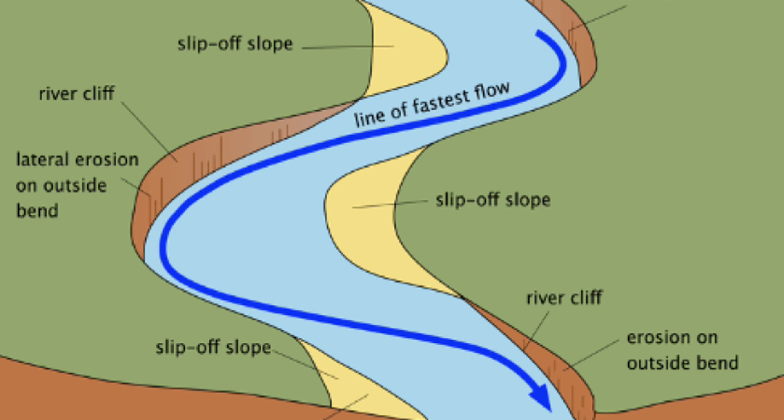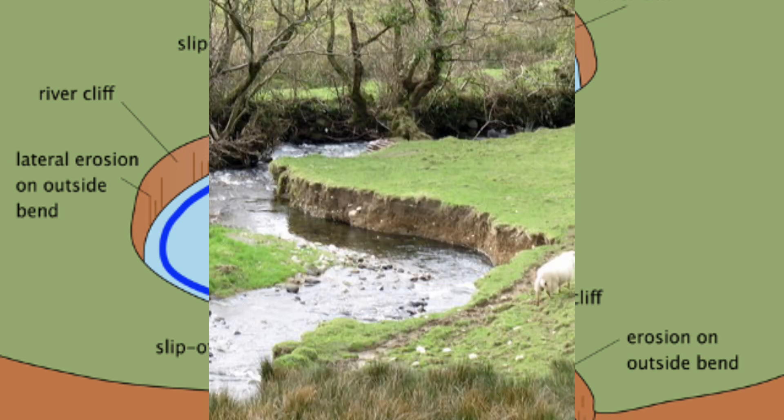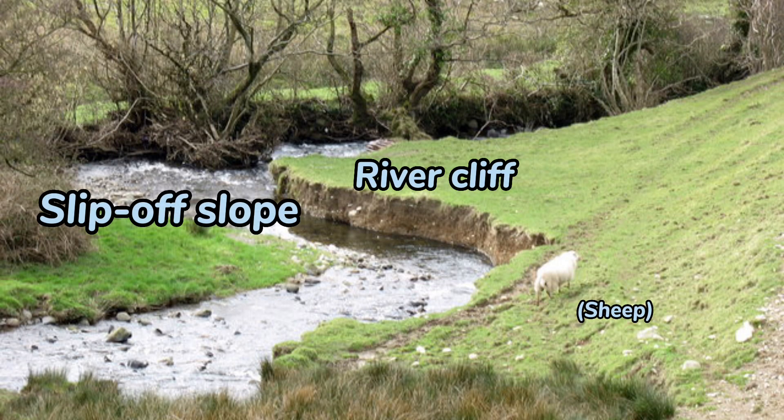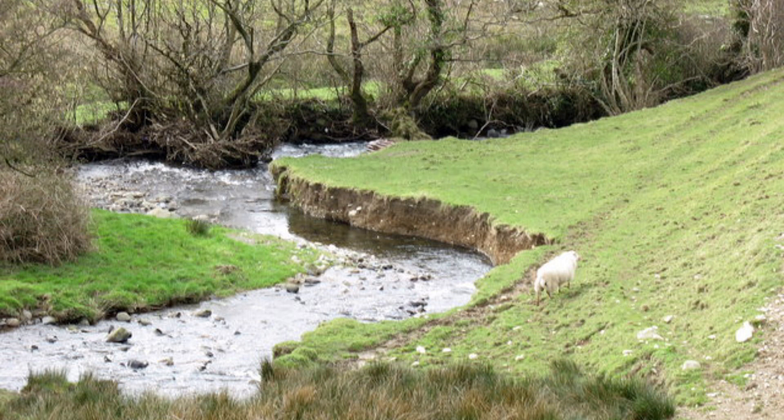Depending on whether the rock is hard or soft, the river may go either left or right. The river travels fastest on the outside of the bend, so it creates a steep river cliff, whilst on the inside of the bend there is a shallow slip-off slope.